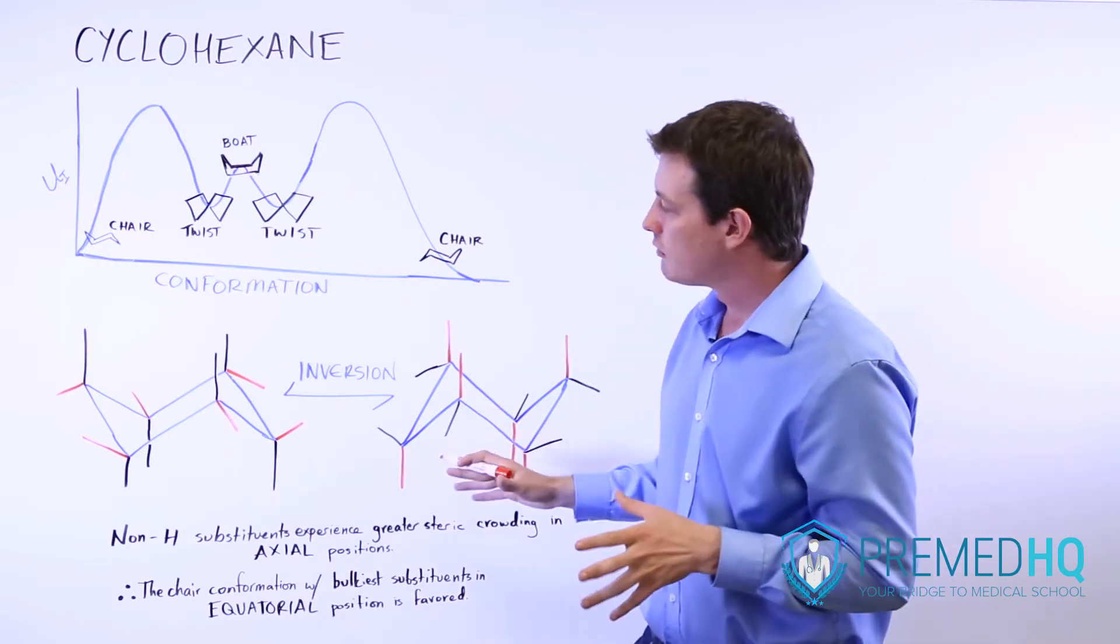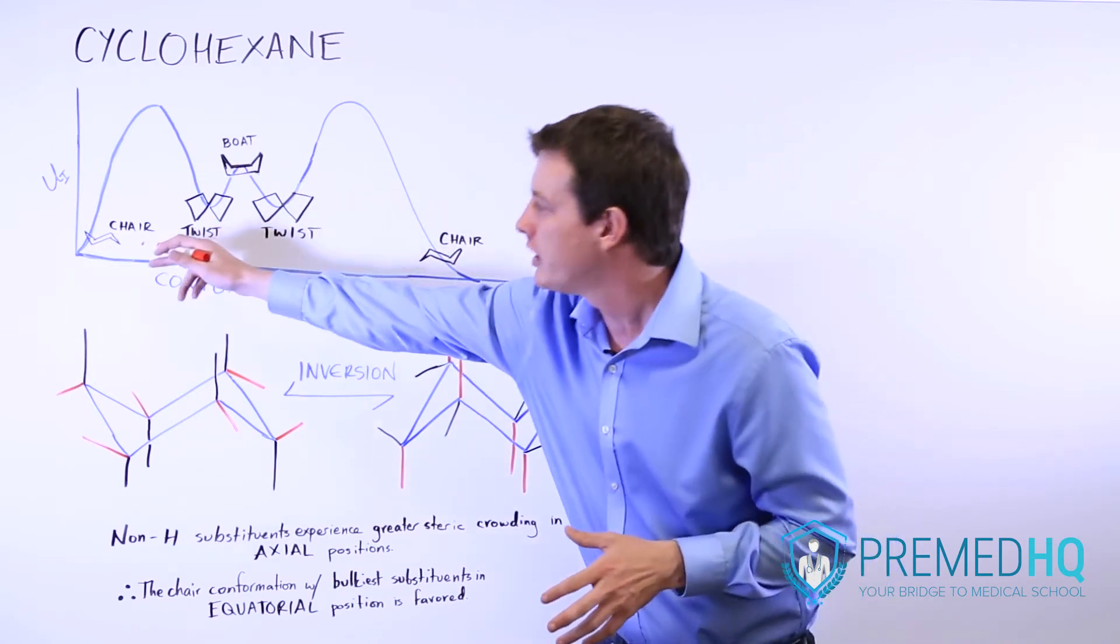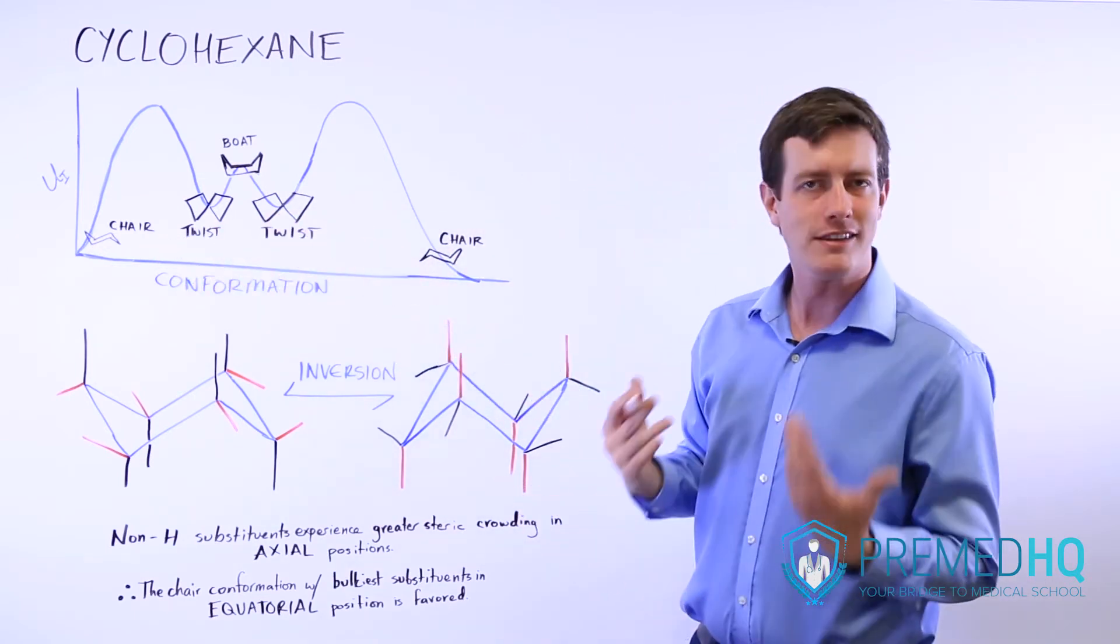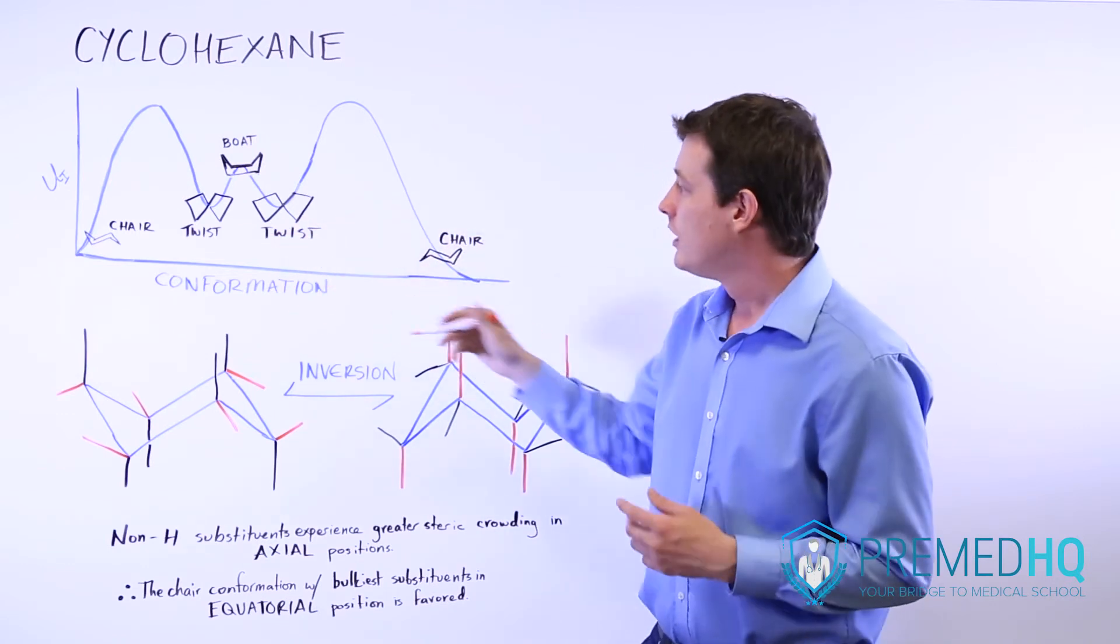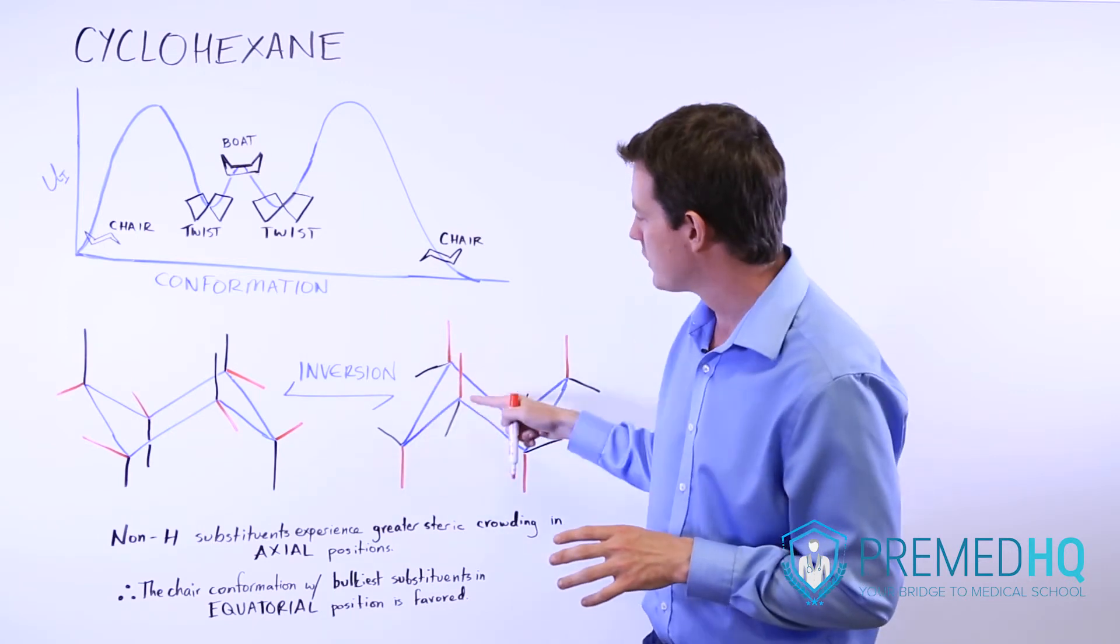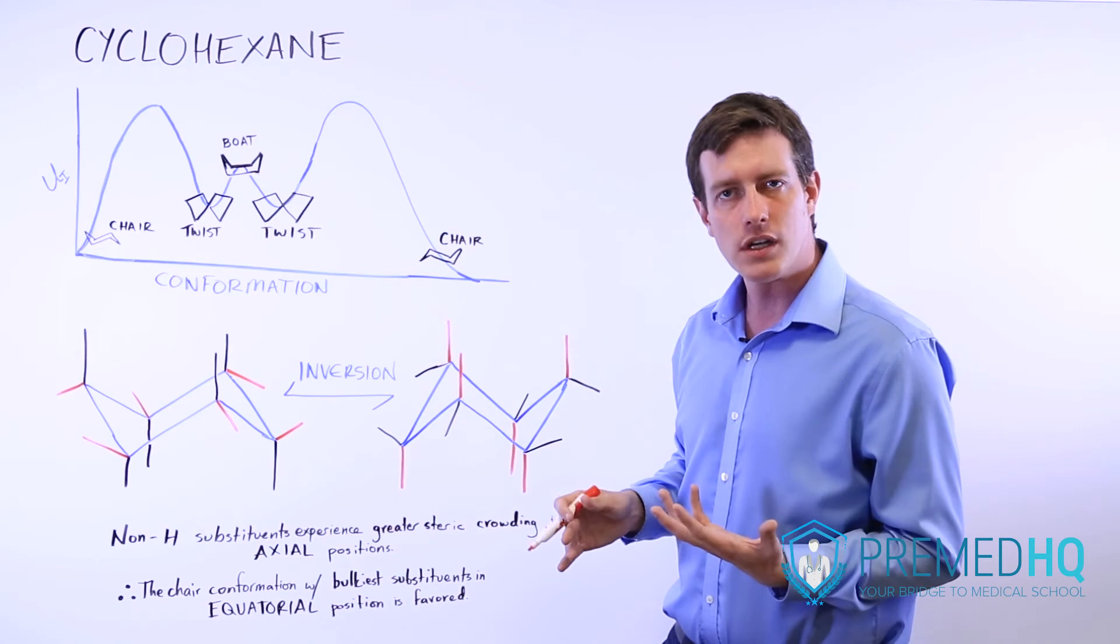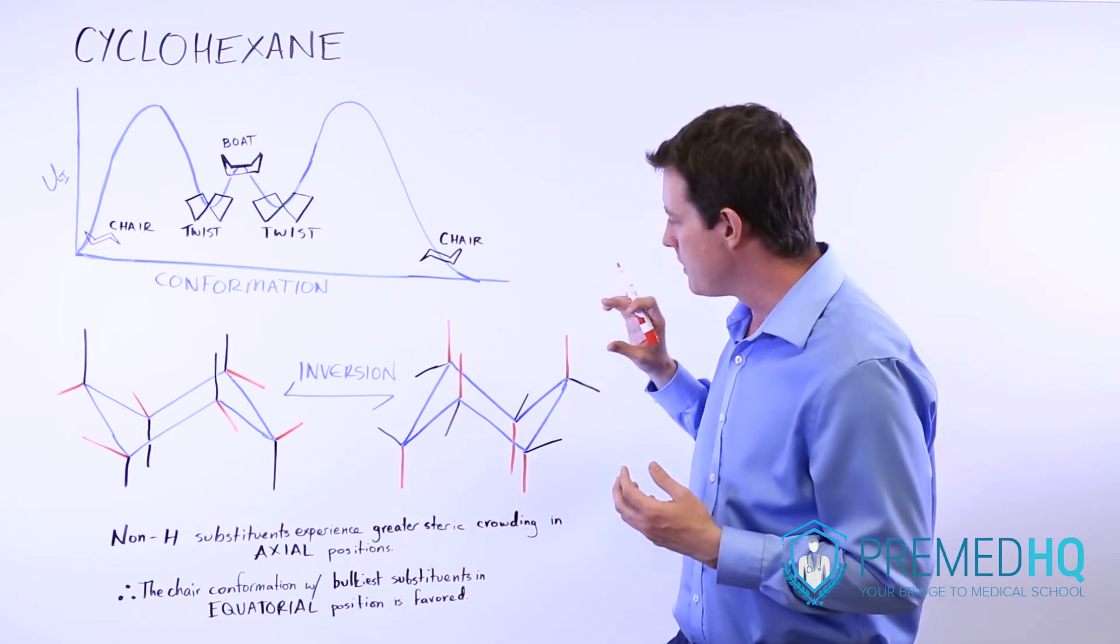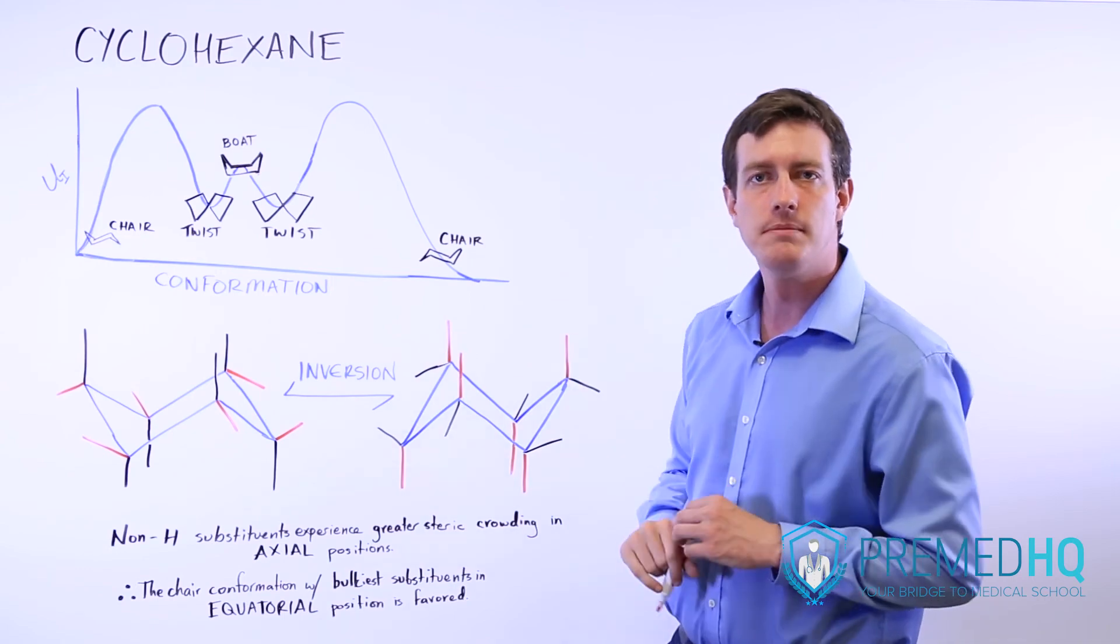And so the general rule is when you're looking at these chair conformations, notice that both chairs are very low energy and thus very stable. But when given a choice between these two, the one that has the bulkiest substituents occupying equatorial positions will be the most stable and thus will be the most favored and the form that you're going to be most likely to encounter that cyclohexane derivative in.